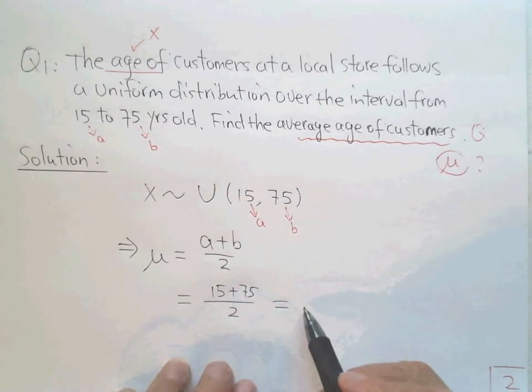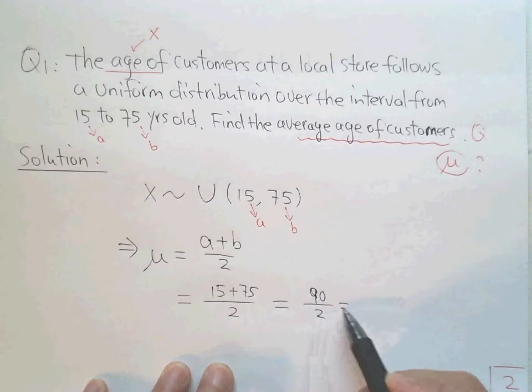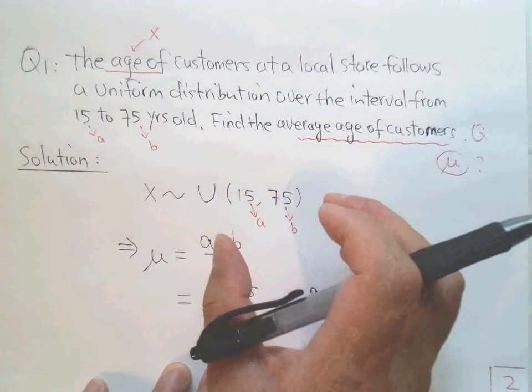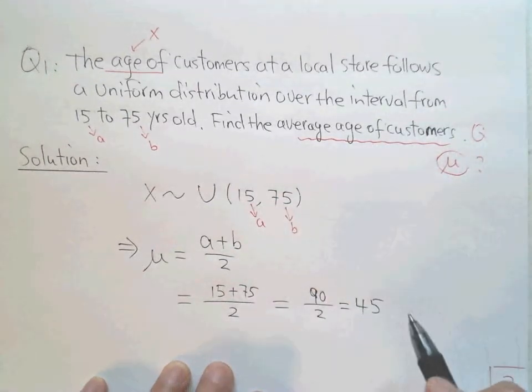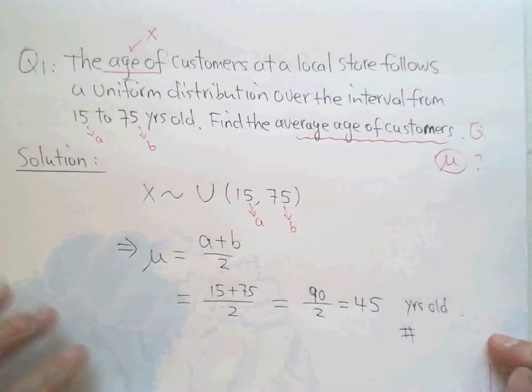15 plus 75 over 2, which is 90 over 2, equals 45.